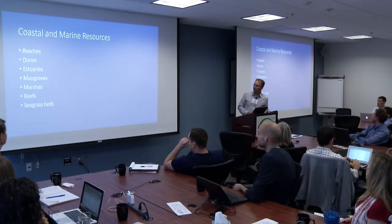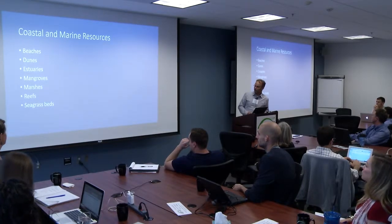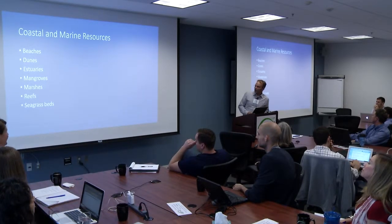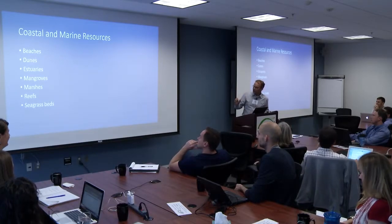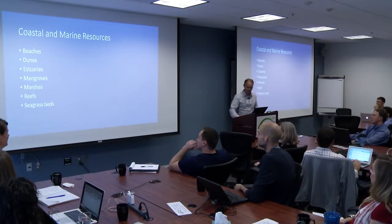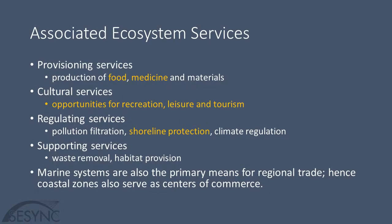So what are we talking about? We're talking about beaches, dunes, estuaries, mangroves, marshes, reefs, and seagrasses — and all the critters that live in there. Ecosystem services — what are they? We've seen this list before. Highlighted in yellow are the ones where there's been a lot of valuation effort, and you see most of it is white, so we're missing a lot of stuff.